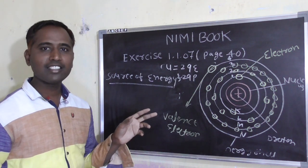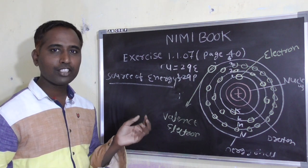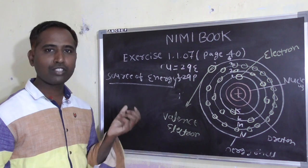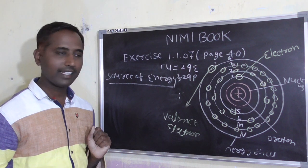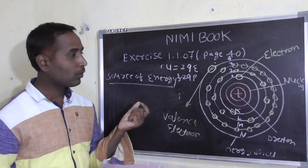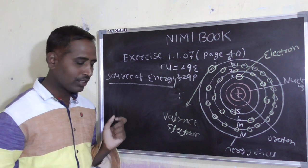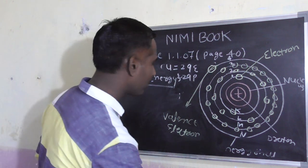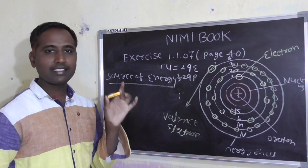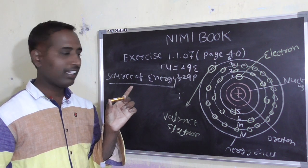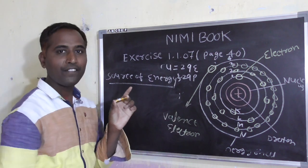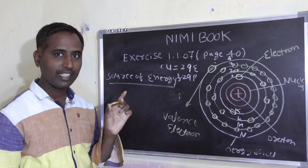अभी यह जो हमारे valence electron है, इसको निकालने के लिए हमको क्या करना पड़ेगा? Source of energy use करना पड़ता। तो इस cell की मदद से इस valence electron को free electron करते हैं।